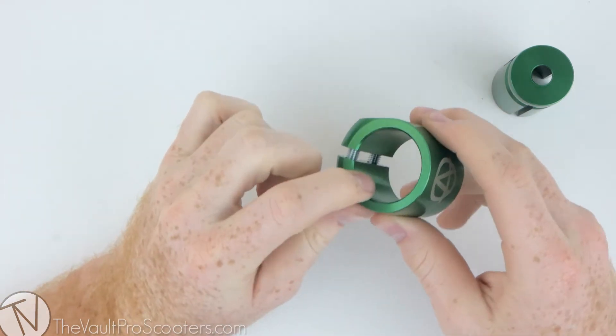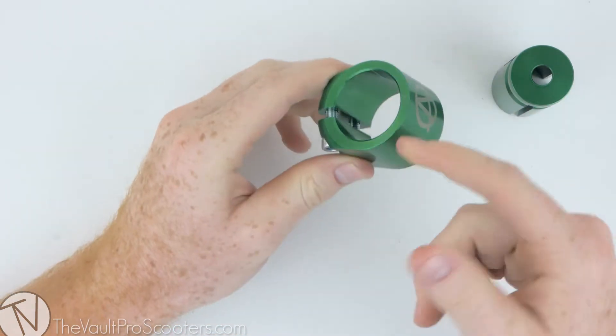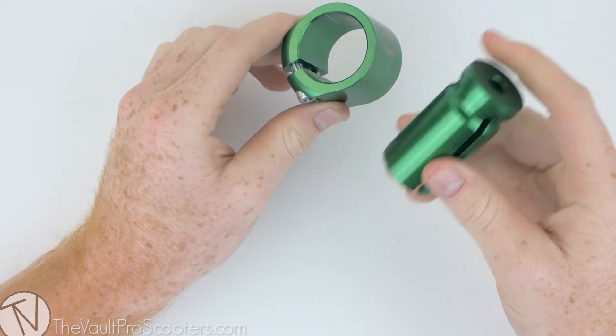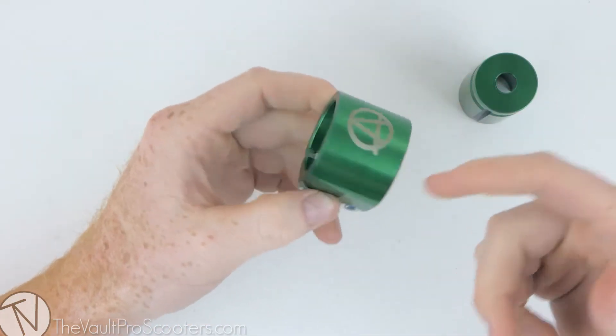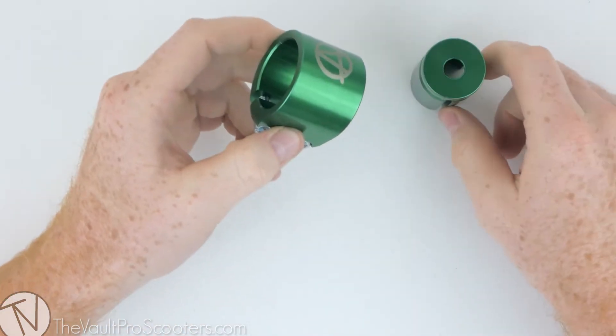This one doesn't come with a shim because of course you're running oversized bars, because this is a standard to oversized shim. So you're obviously not going to need the clamp shim to run standard bars because you wouldn't be buying this then.